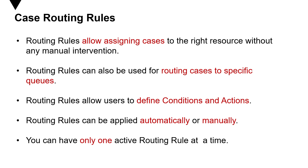Routing rules allow users to define conditions and actions. That means based on a particular condition or specific requirement, you create an action on a particular case. Routing rules can be applied automatically or manually. When we say automatically, that is based on certain triggers — the system itself takes care of the routing rules. By manually, we mean that you go to a case and apply the routing rule yourself, and behind the scenes, the routing rule conditions and actions are applied.